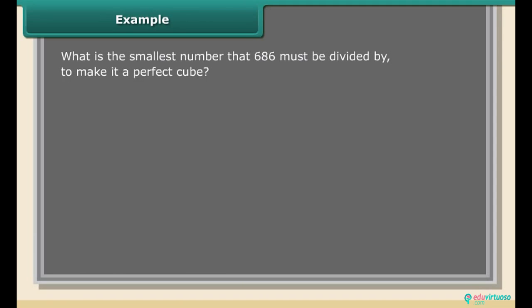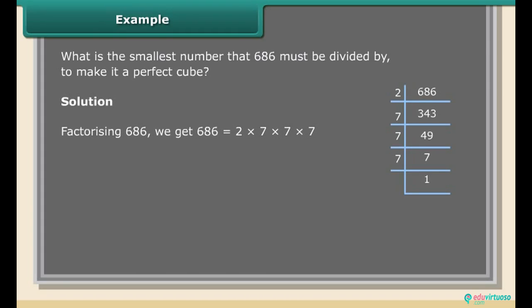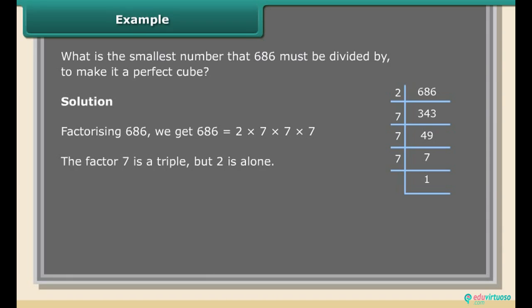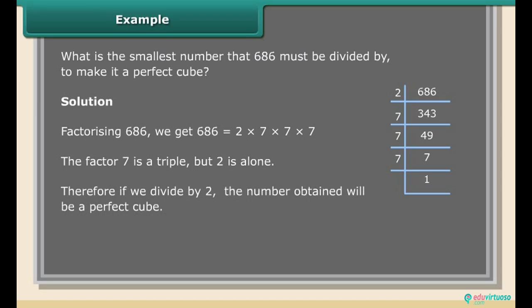Example: What is the smallest number that 686 must be divided by to make it a perfect cube? Solution: Factorizing 686 gives 686 = 2 × 7 × 7 × 7. The factor 7 forms a triple, but 2 is alone. Therefore, if we divide by 2, the number obtained will be a perfect cube.